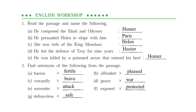Question number 1: Read the passage and name the following. First — he composed the Iliad and Odyssey. The answer is Homer. Second — he pursued Helen to elope with him. The answer is Paris.